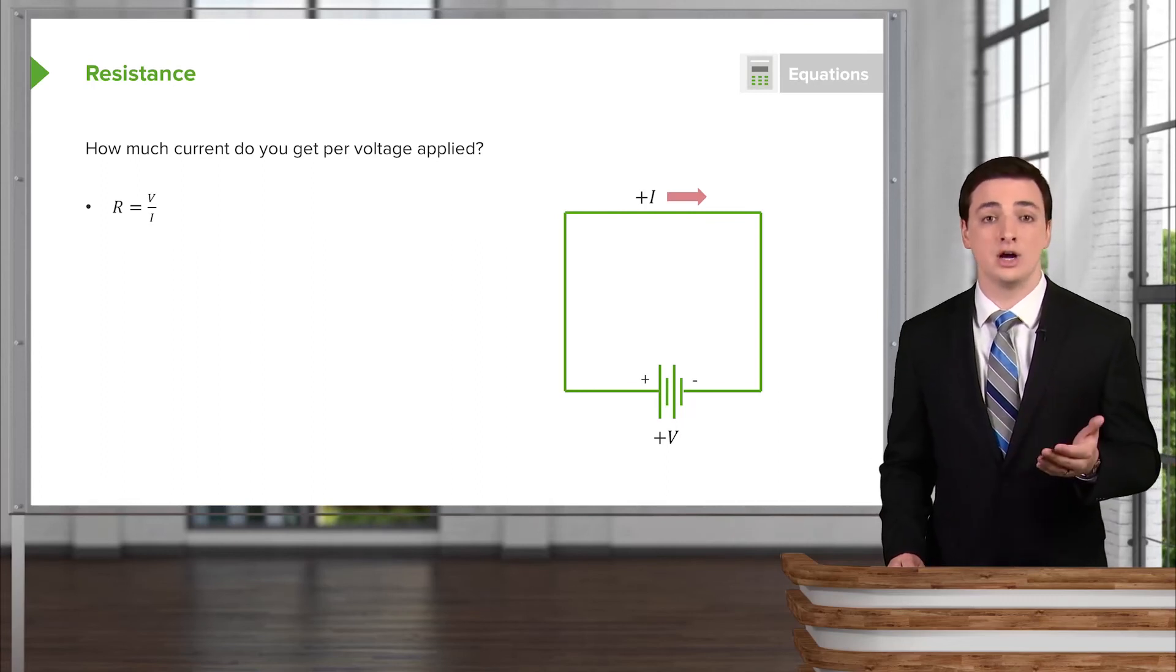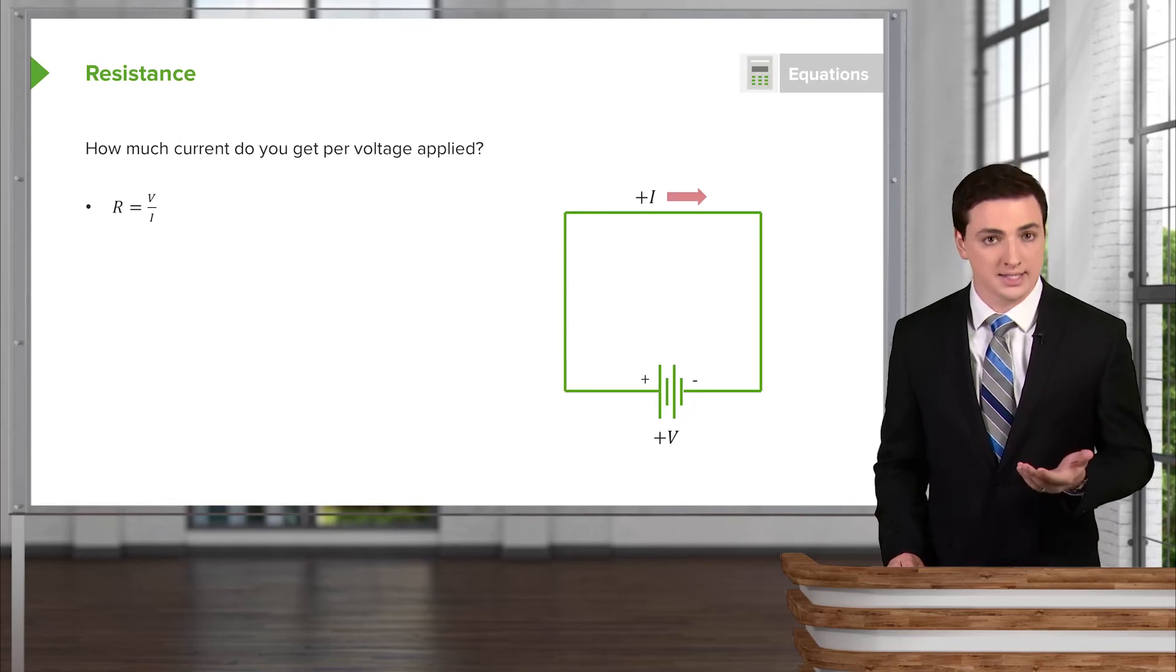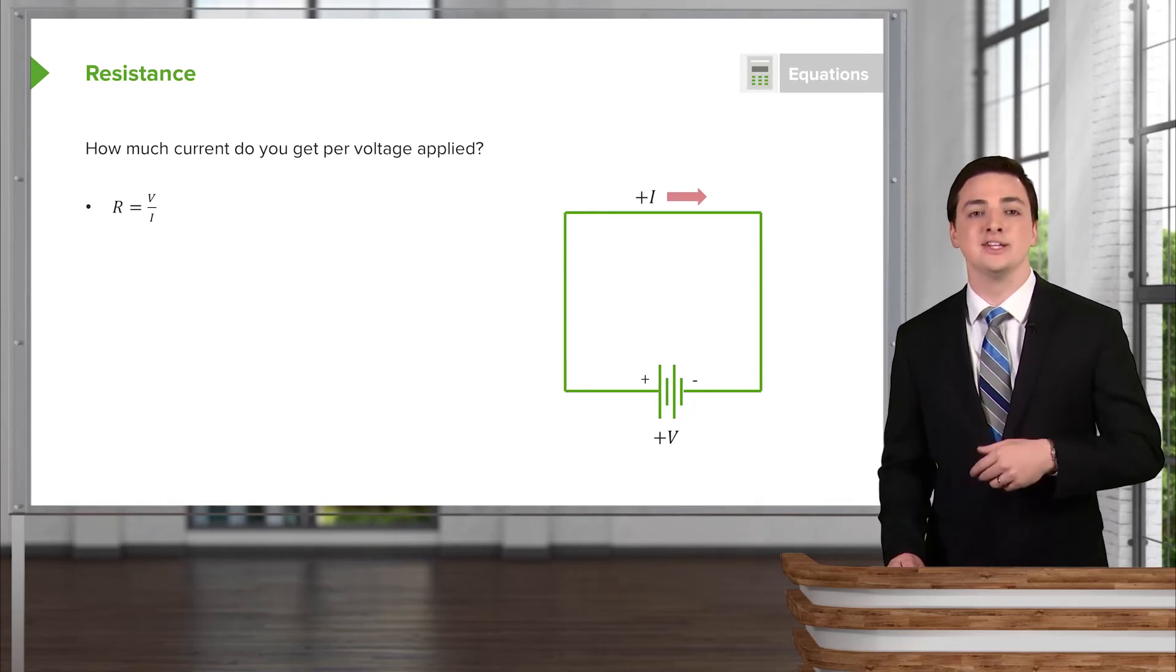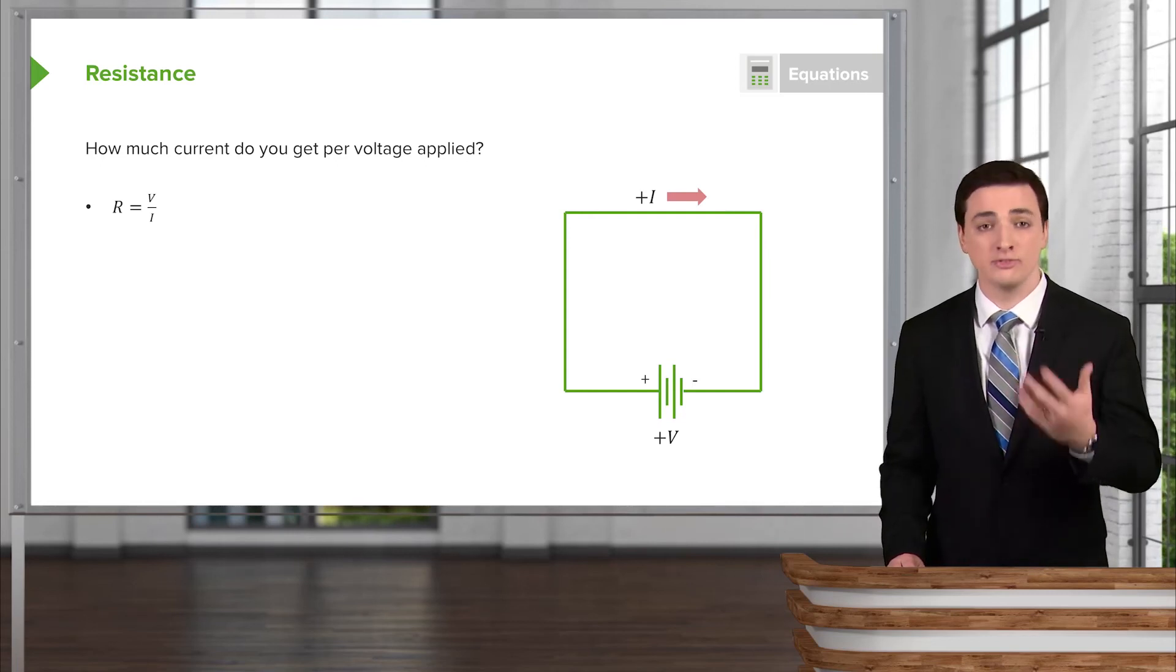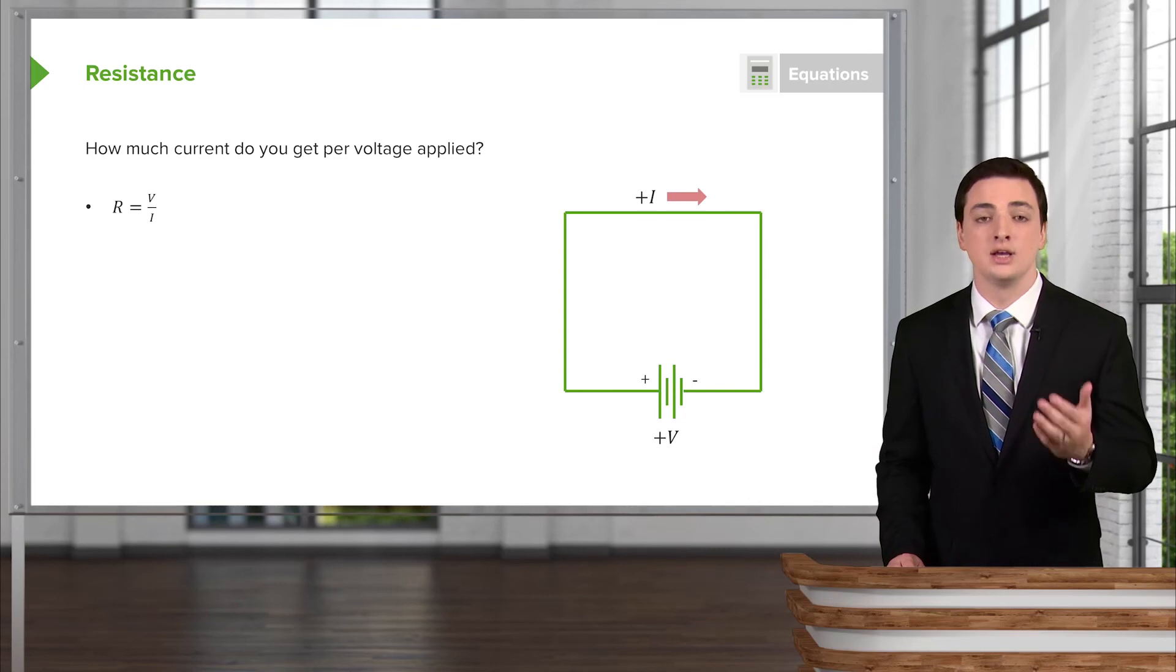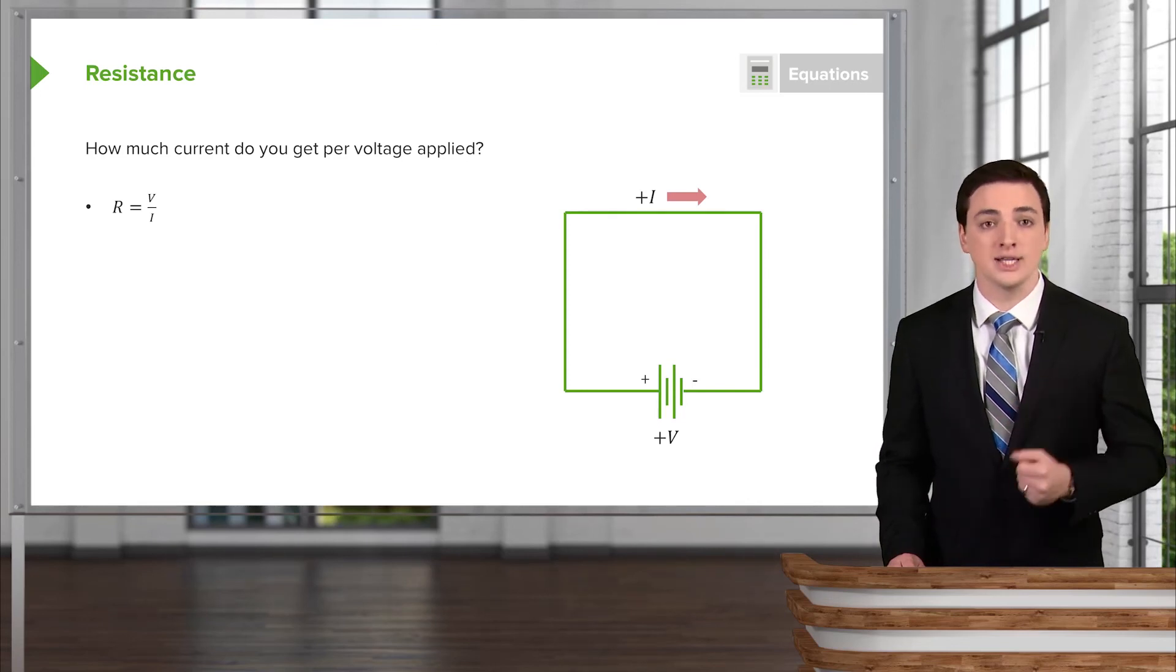And so in that context, we called it the circuit law for the flowing systems. In this case, we are actually introducing the circuit law by writing down the resistance as the ratio of the voltage, the amount of pressure we apply, per amount of current that we get out.